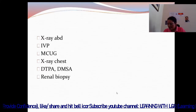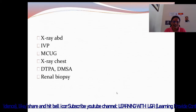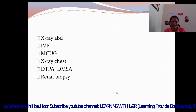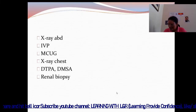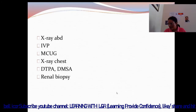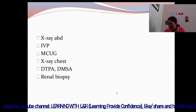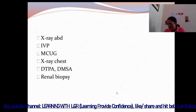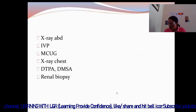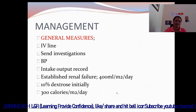MCUG — micturating cystourethrogram — is a procedure to investigate anatomical abnormalities, along with chest X-ray. DTPA — diethylene triamine pentaacetic acid — is a method to measure blood flow to the kidney and urinary excretion. DMSA — dimercaptosuccinic acid — is a scan using radioactive chemicals to create special pictures of the kidney, and renal biopsy is also performed.